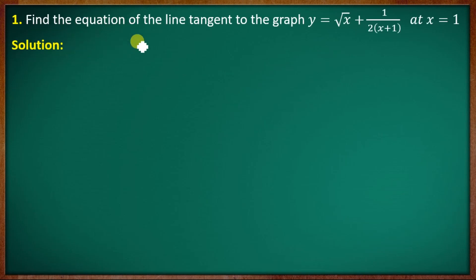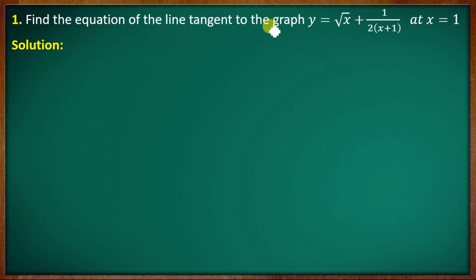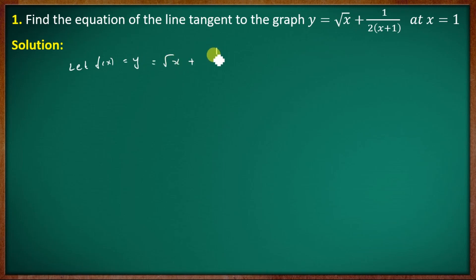First, find the equation of the tangent line to the graph y = √x + (1/2)(x+1) at x = 1. We are discussing the tangent line to f(x). Let f(x) = y, so y = √x + (1/2)(x+1). Here x₀ is equal to 1.